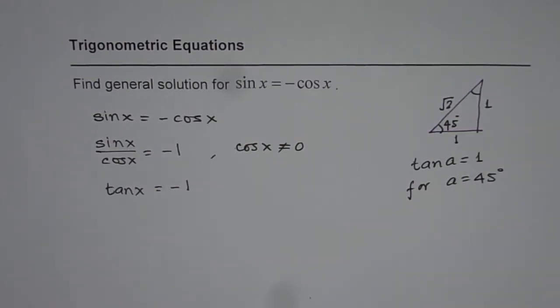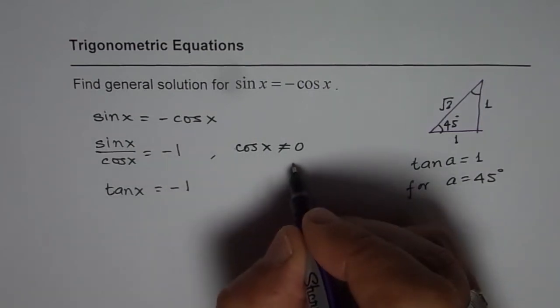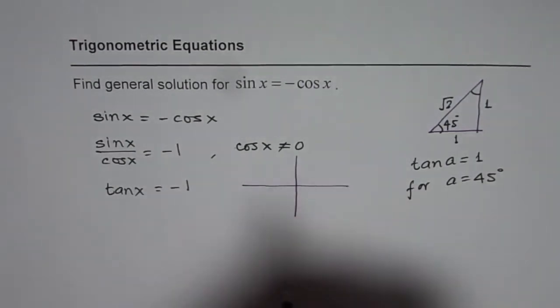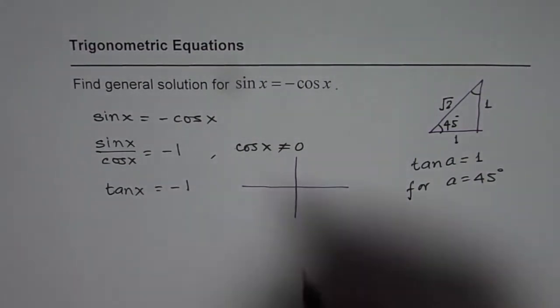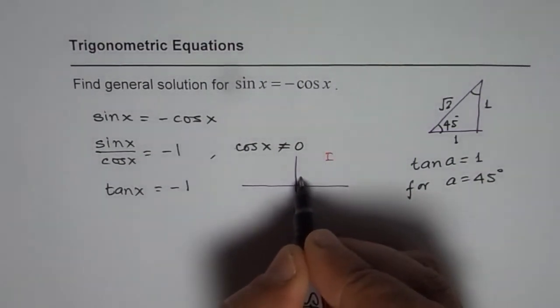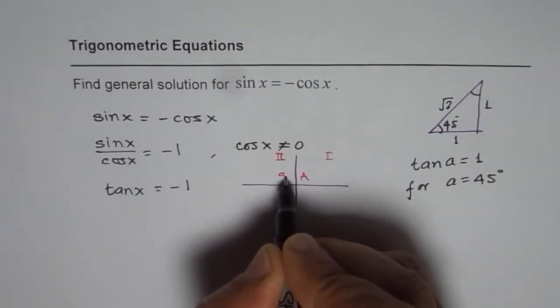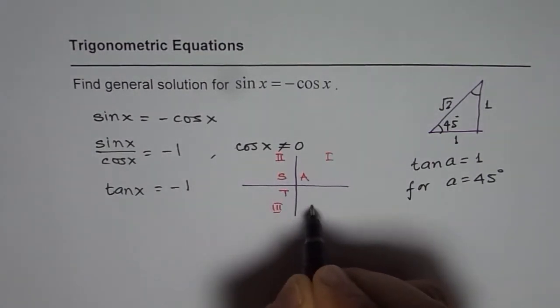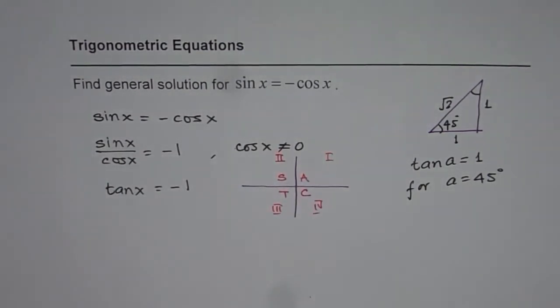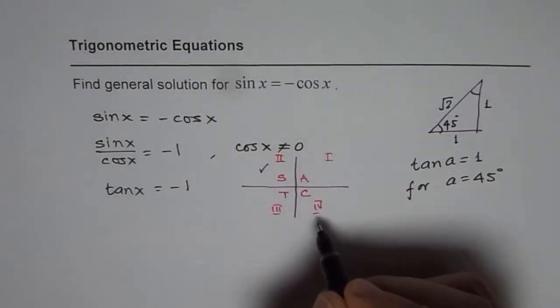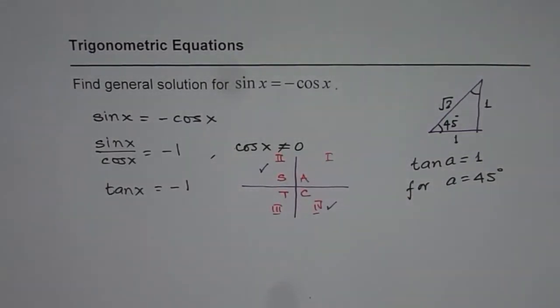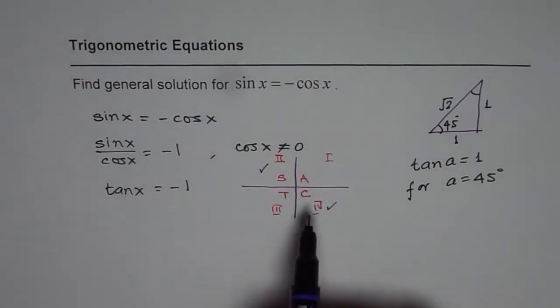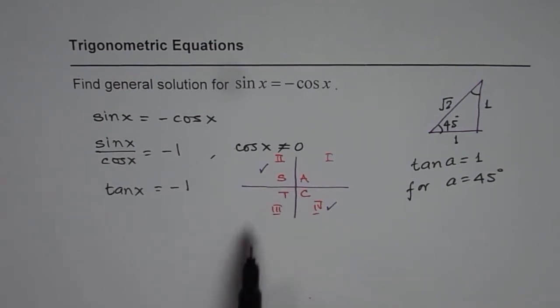Other approach is that we can use the calculator, but whenever you use calculator I will suggest you use it along with the knowledge of quadrants. Let us say we have these quadrants and in these quadrants we know quadrant 1 all are positive. In quadrant 2 sine is positive, in quadrant 3 tan is positive and in quadrant 4 cosine is positive. Since tan x is minus 1 we are actually looking for two solutions. It could be in quadrant 2 or in quadrant 4. So it is kind of important to see it, otherwise if you use calculator you will miss on one of the solutions.